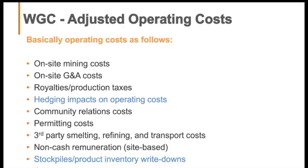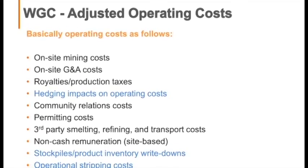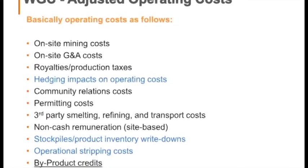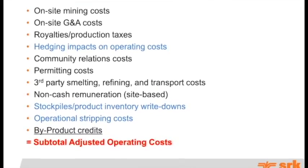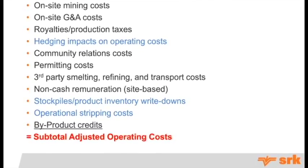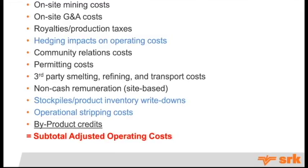The first step in the World Gold Council framework is the adjusted operating costs. Pretty well, it captures everything. The items in blue are more or less some stockpile adjustments and some non-cash adjustments, with a bit of hedging. But overall it captures and includes by-product credits. Overall it seems to capture most of your operating costs.